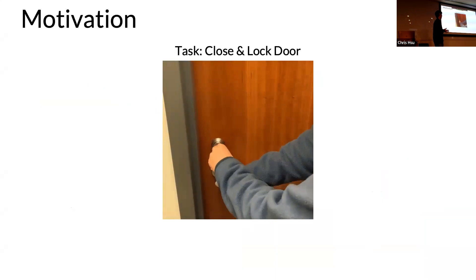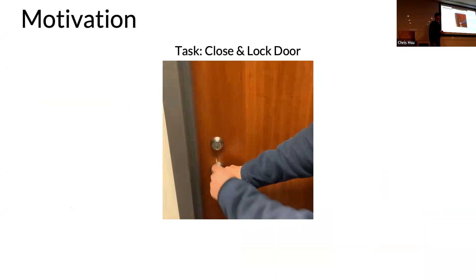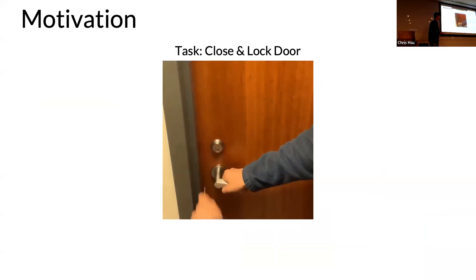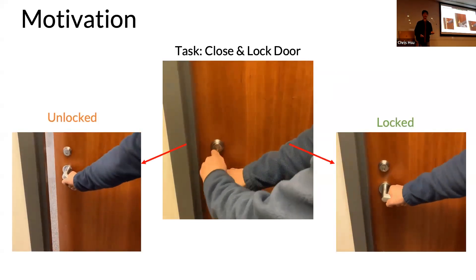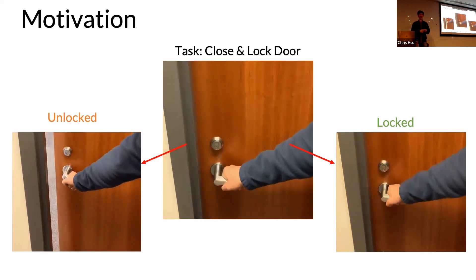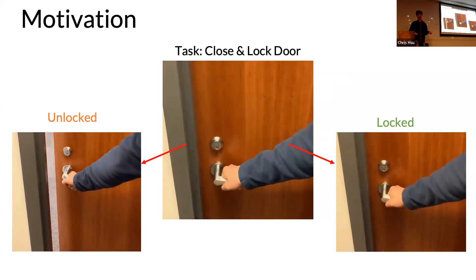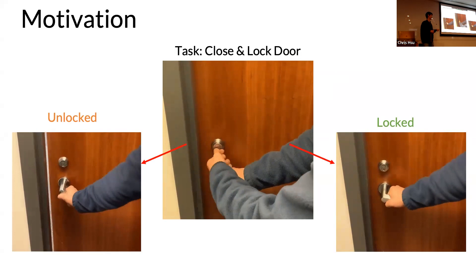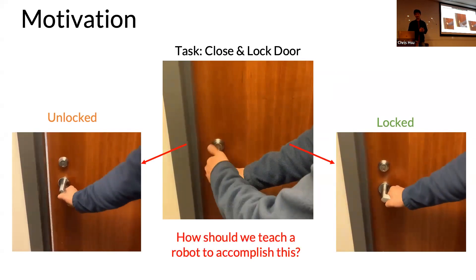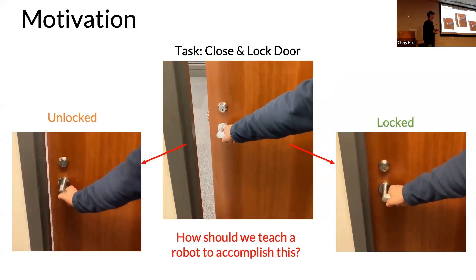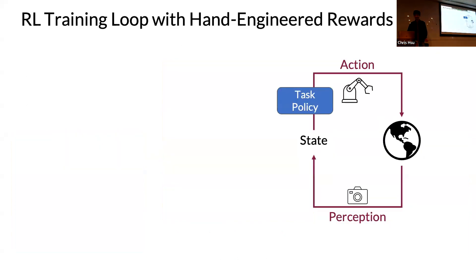Let's motivate this with a simple task: closing and locking a door. If you close and lock a car door, you probably try to open it again just to make sure it actually locked. There's some kind of verification: we want to interactively verify that the door is locked. What's interesting is we're using physical interaction with the object to reveal the true state of the door.